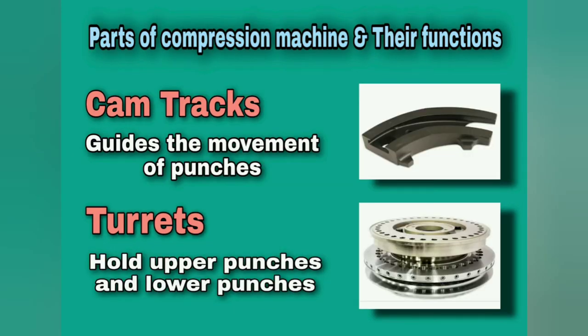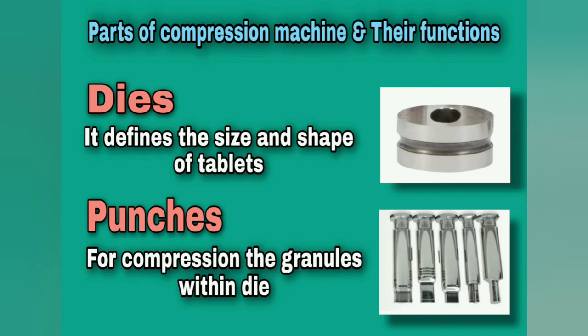Cam tracks. Cam tracks are used to guide the movement of the punches. Turrets. The turret is used for holding the upper punches and lower punches. Die. The die defines the size and shape of the tablets.